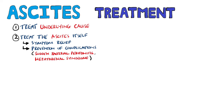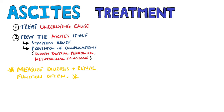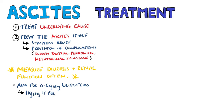Diuresis — meaning urine production — and renal function both need to be measured. Diuresis is measured both by urine volume and by weight loss. The aim is to lose up to 0.5kg per day, or 1kg a day if they also have peripheral edema.